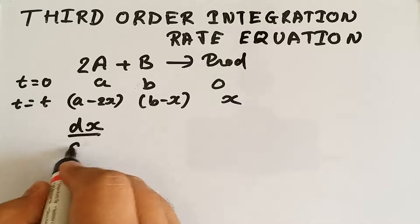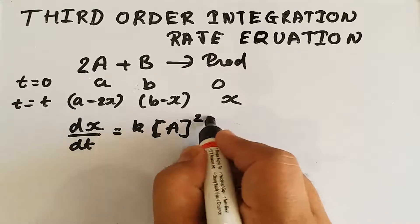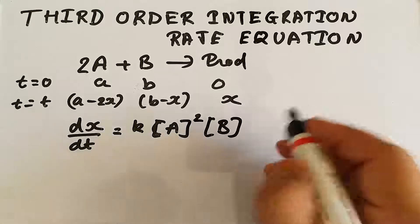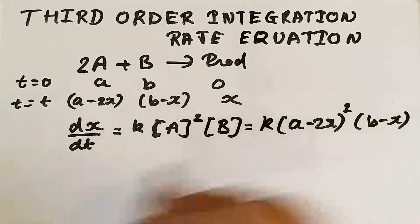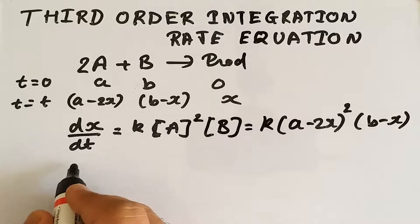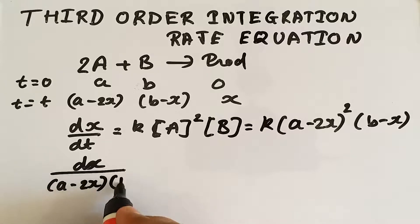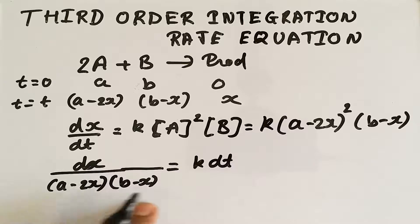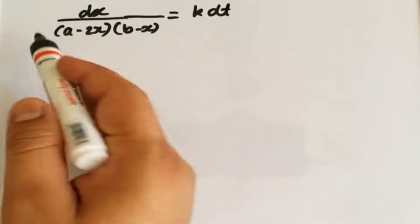The rate of reaction is given by dx/dt = k·[A]²·[B], which is second order with respect to A and first order with respect to B. Substituting concentrations: dx/dt = k·(a − 2x)²·(b − x). Rearranging, we get dx / [(a − 2x)²·(b − x)] = k·dt. The steps involved in solving this are more mathematical than chemical.